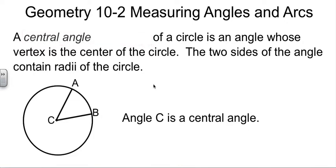When we talk about a central angle for a circle, we're talking about an angle that has the vertex at the center, and the two sides of the angle contain radii of the circle. CA and CB are both radii. Angle C would be called a central angle.